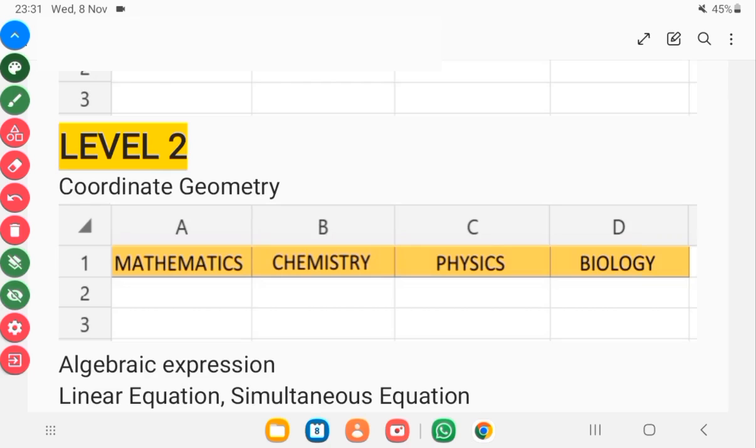Now in level two, you need to understand coordinate geometry to know how your graph works. When you are plotting graphs in physics and mathematics, you are asked to find the gradient, parallel lines, and so on. You need to understand them.